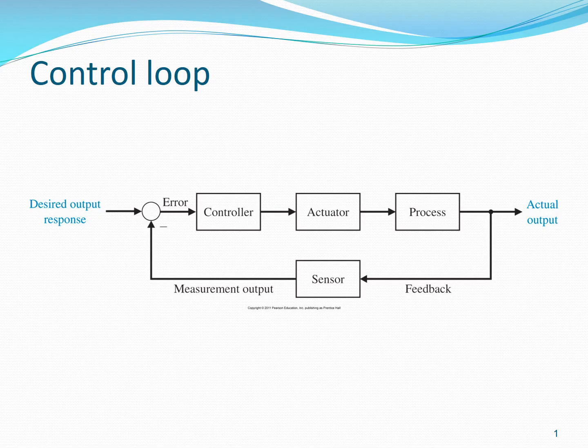The output is measured by some sensor and then the measured value is compared with the desired output — this is called feedback. Based upon the difference between desired output and actual output, an algorithm called the controller decides what action should be taken. The actuator is the component in the control system which converts the command generated by the controller into a physical actuation. We have many terminologies on this slide but we will explain these on the next slide with examples.